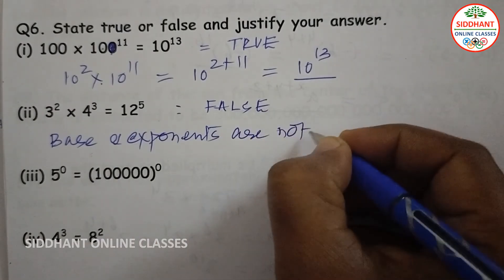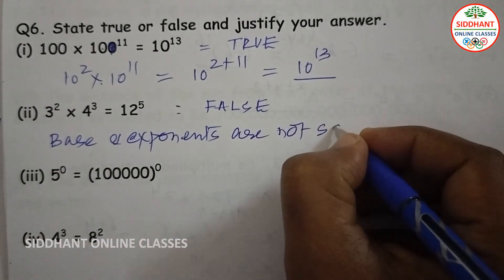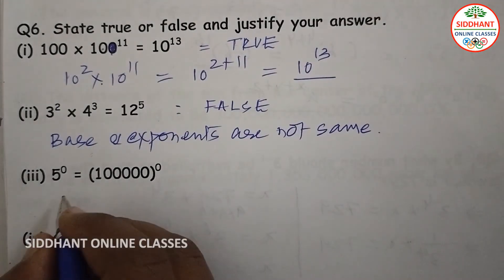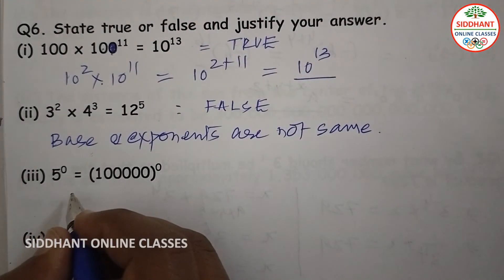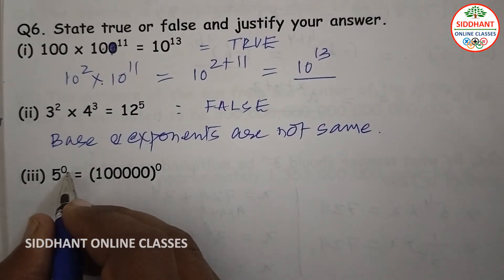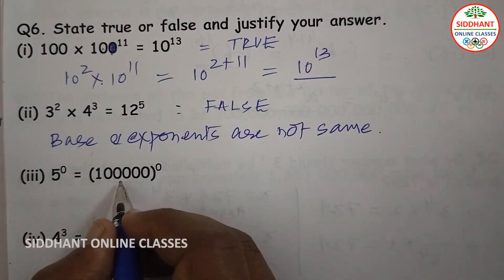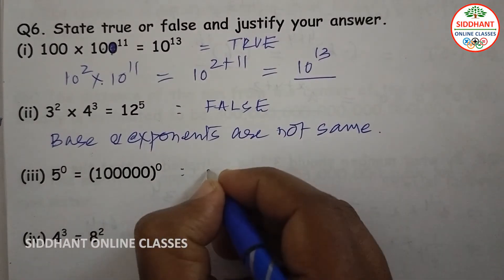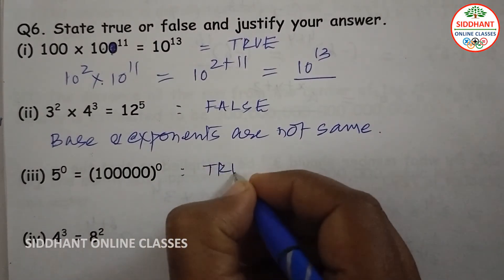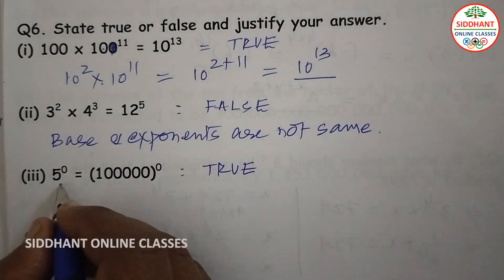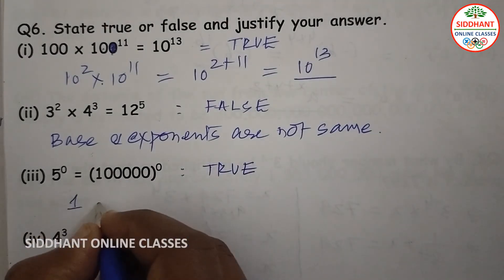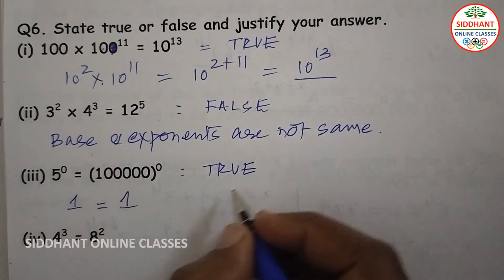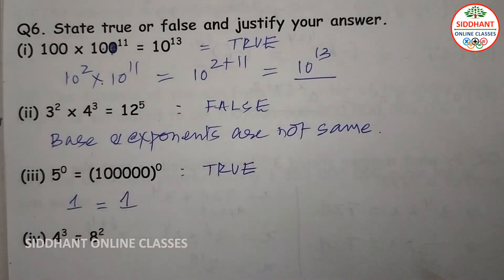Third one: 5 to the power of 0 equals 1 lakh to the power of 0. The statement is true. 5 to the power of 0 equals 1 and 1 lakh to the power of 0 also equals 1, so 1 equals 1, the statement is true.